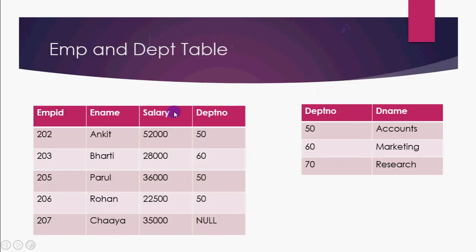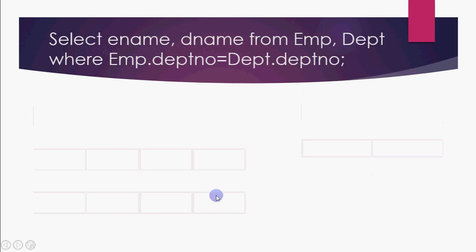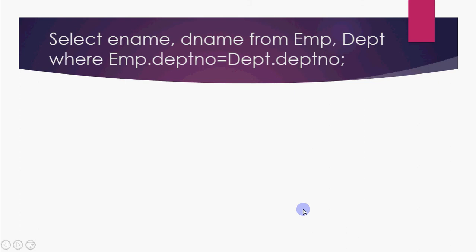Let's see how this works using the employee and department tables. In the employee table, employee ID 6207 has a null department number, meaning it will not match any department. In the department table, department number 70 has no matching employee assigned to it. So one record has no department number, and the research department has no employee.